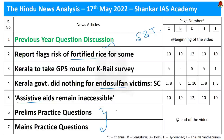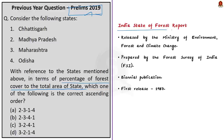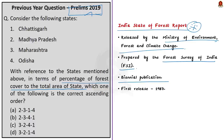Let us start the discussion with the previous year question from the 2019 prelims paper. The question is about forest cover, particularly the percentage of forest cover to the total area of the state. Whenever we talk about forest cover or tree cover, the answer lies in the State of the Forest Report. This is an Indian report released by the Indian Ministry of Environment, Forest and Climate Change, prepared by the Forest Survey of India. This is a biennial publication released every two years. The first report was released in 1987, and the recent report was the 17th report, released in 2021.